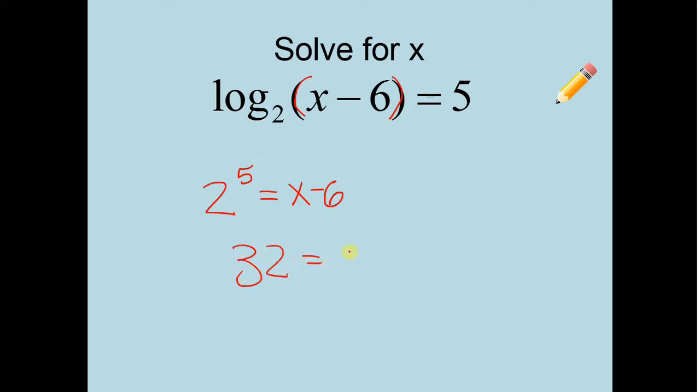So now I got 2 to the 5th. That is 32. x minus 6. Gotta add 6 from both sides. 32 plus 6, 38. x has to be 38. Not too bad, right? Basically, all we need to do is convert to exponential form.